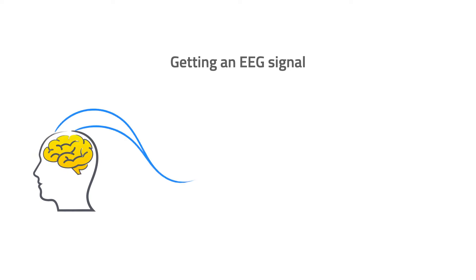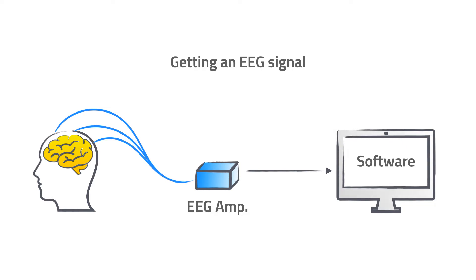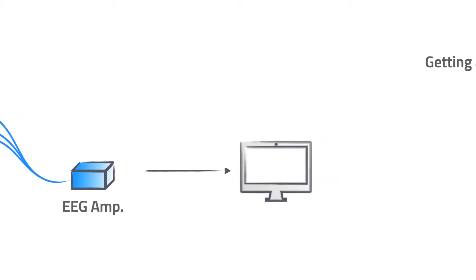How does a neurofeedback or biofeedback session start? First, you need to get an EEG signal, so all you need to do is hook a person up to an EEG via conductive or bridge electrodes, then plug into your EEG amplifier. This amplifier sends a signal to your computer where the software runs — for example, a Nexus device uses BioTrace, and a Brain Master device runs Brain Avatar.